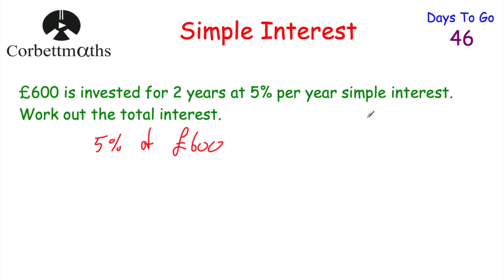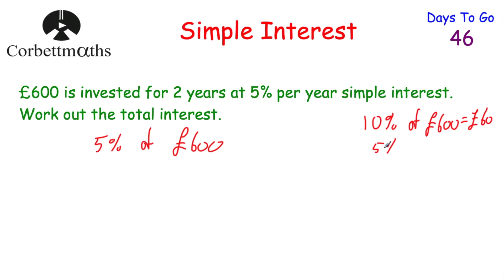This is a non-calculator question. So to find 5% of £600, I would start by working out 10% of £600. To find 10%, I just divide by 10, so that's £60. So 10% of £600 is £60. Therefore 5% of £600 would be half of that — half of £60 — which is £30. So 5% of £600 is £30.